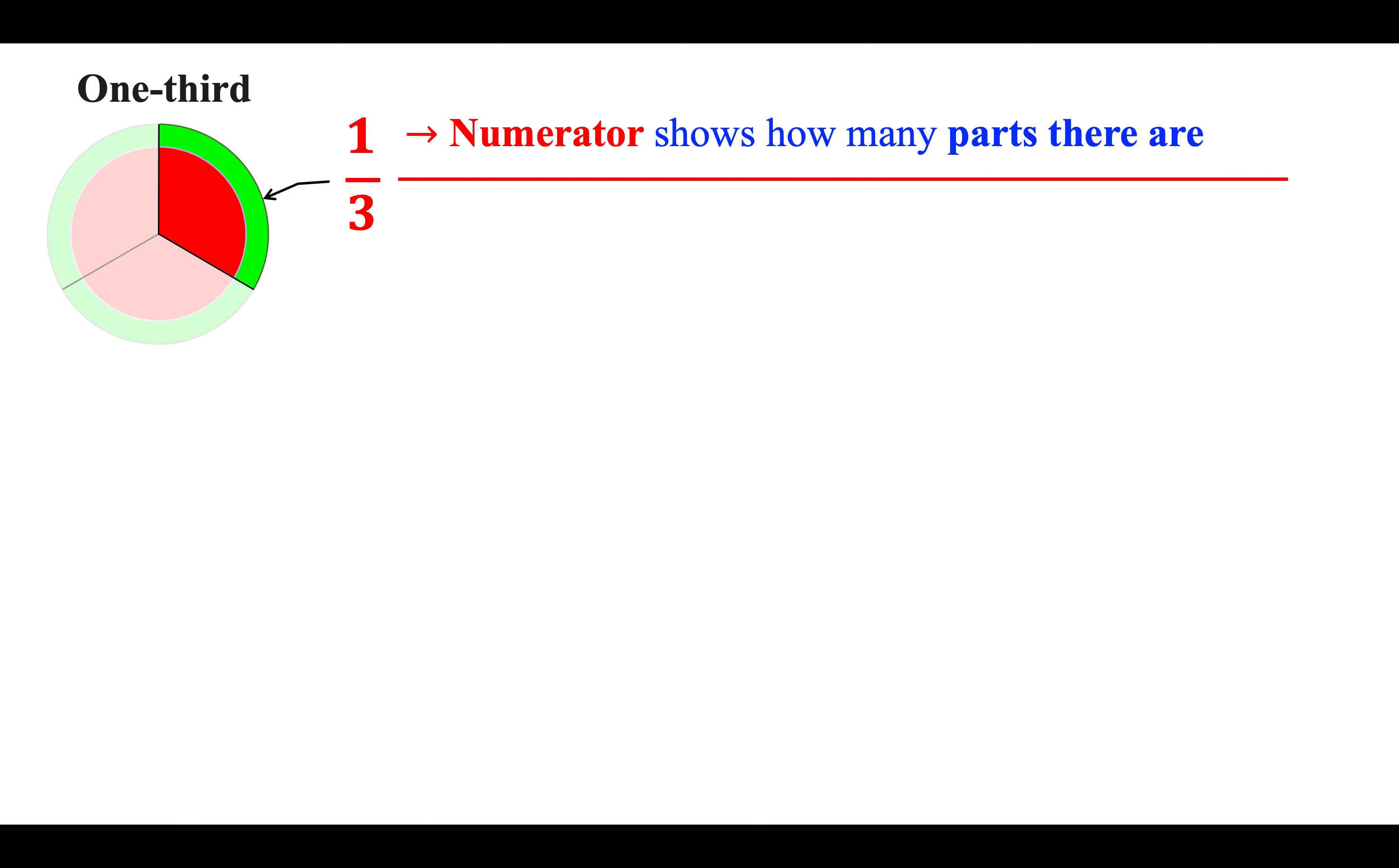Numerator shows how many parts there are. Denominator shows how many parts something has been divided into.